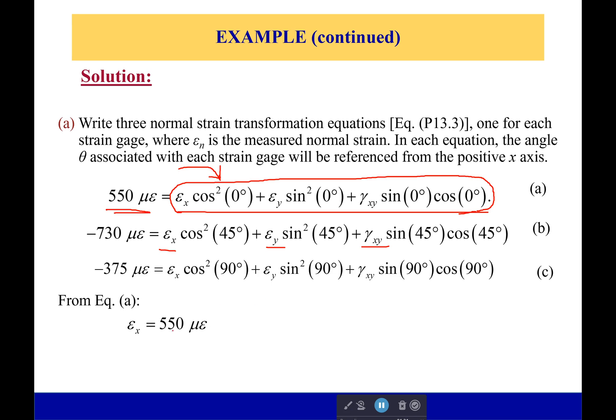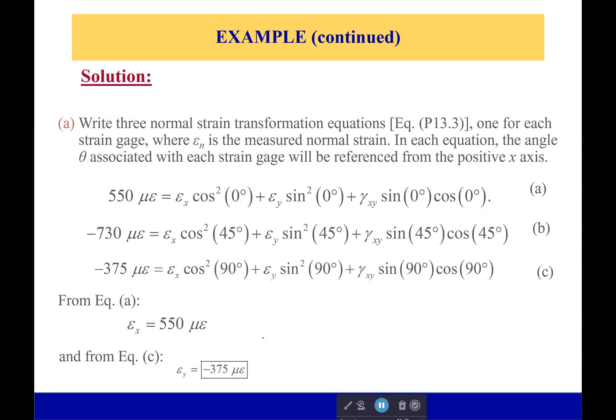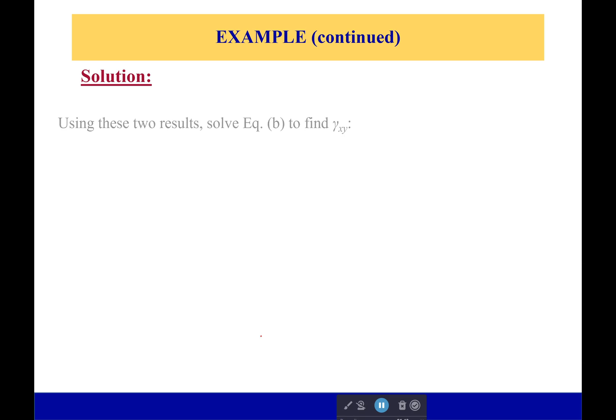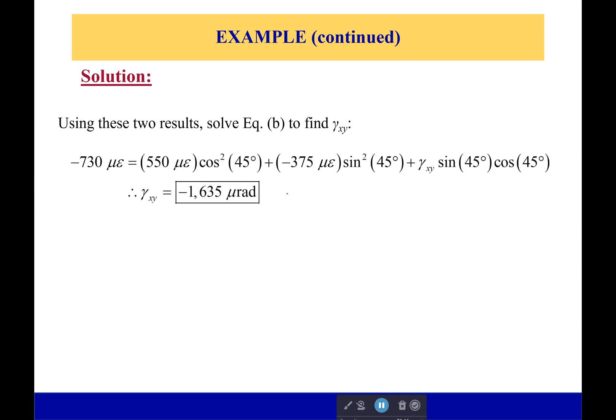So once you do this, we can start solving. So from equation A, we can solve and say, okay, I've got 550 microstrains as my strain in the x direction. For equation C, I get my strain in the y direction is going to be negative 375 microstrains. And then using both of those, I can solve for the shear strain, and I get that it's negative 1,635 microradians. So I have all of these now.